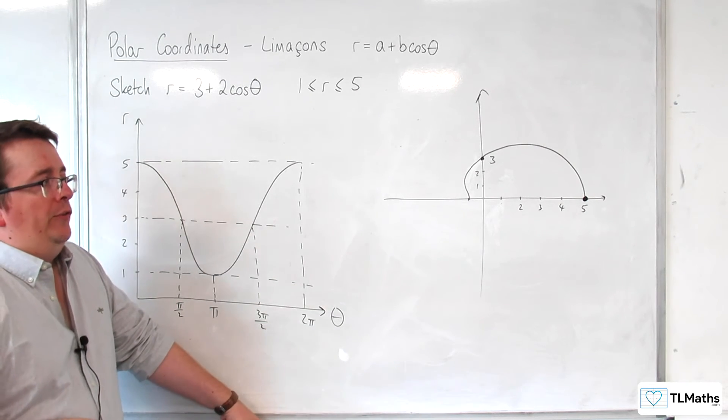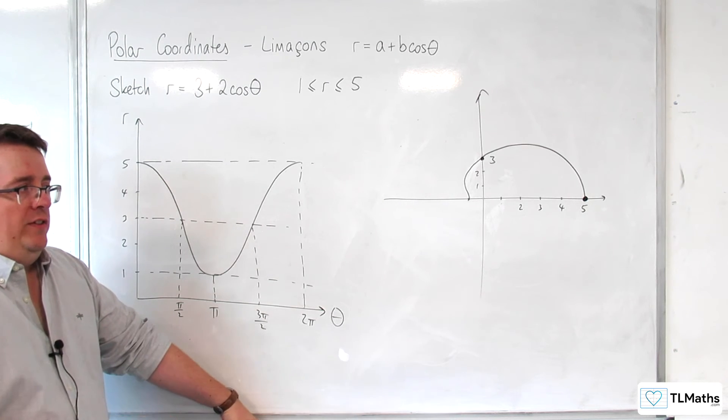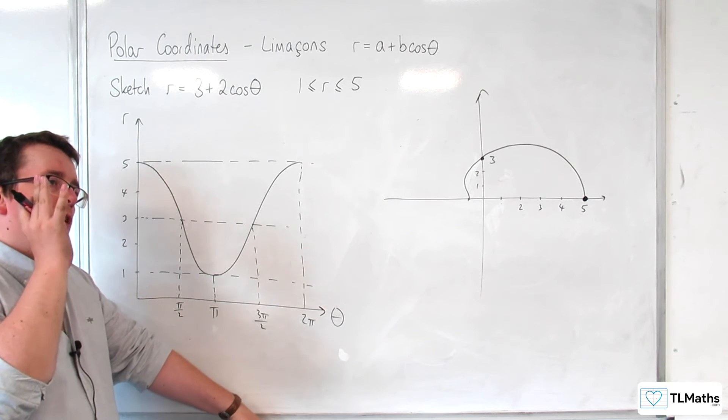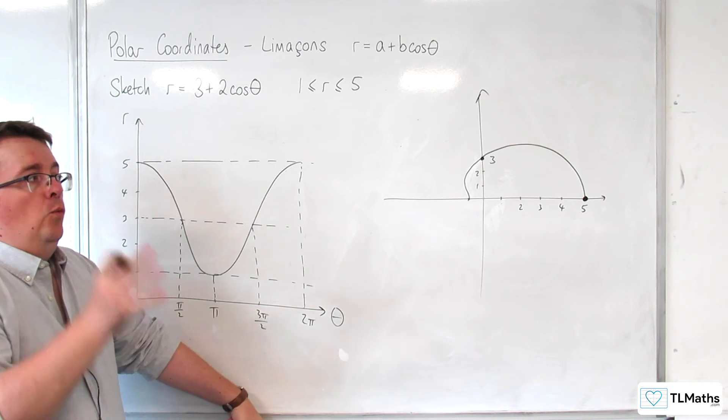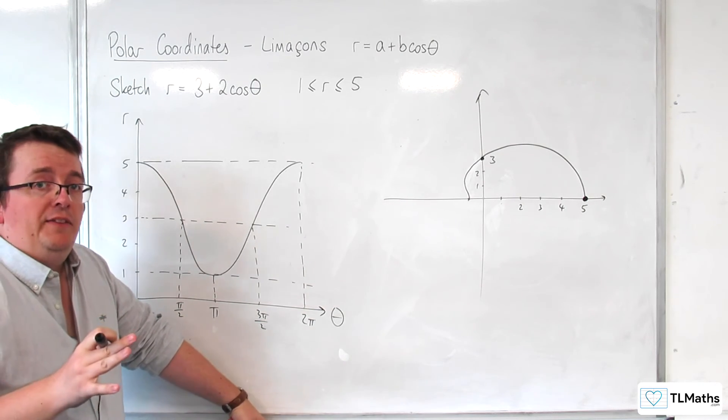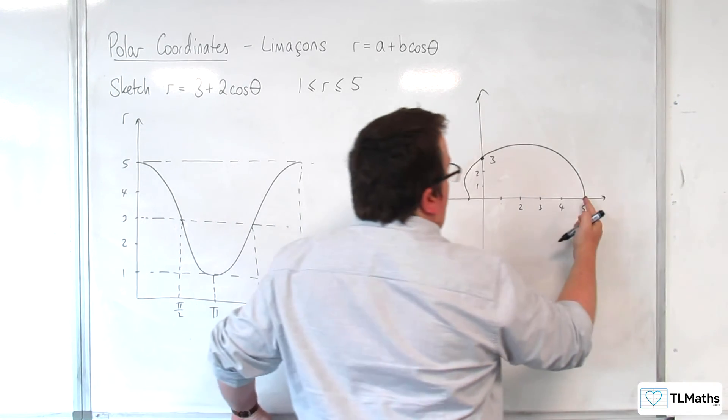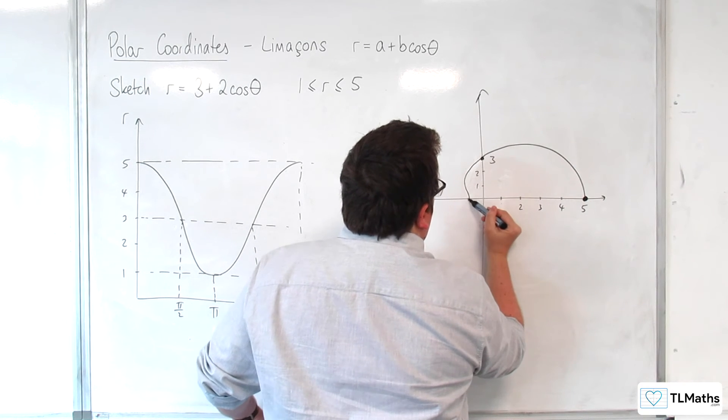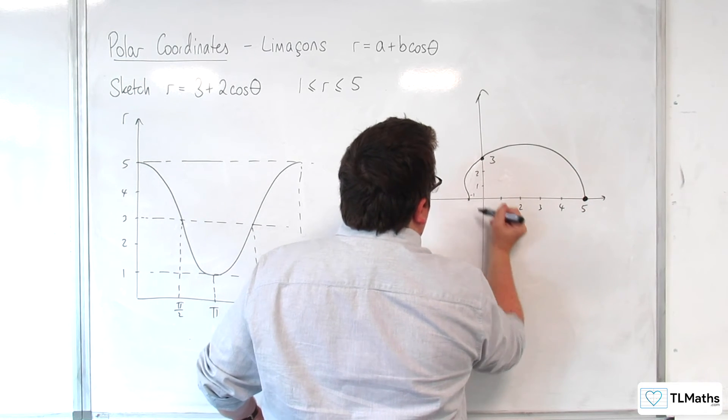Now, in the extension videos from earlier, we looked at this curve and we saw that there were four points where the tangent was perpendicular to the initial line. And I included this point here, this point, this point, okay, so that's at minus 1.